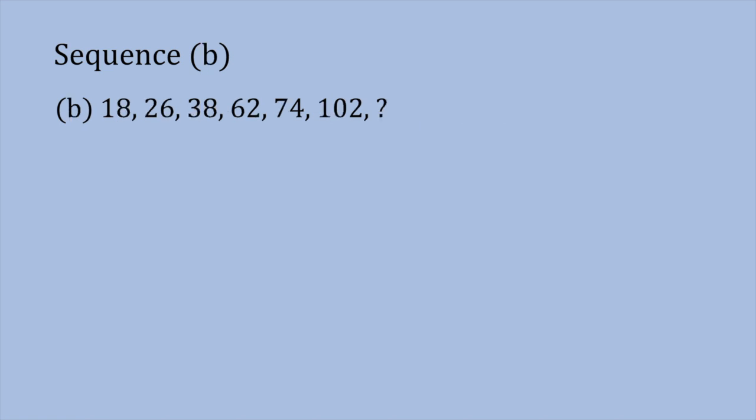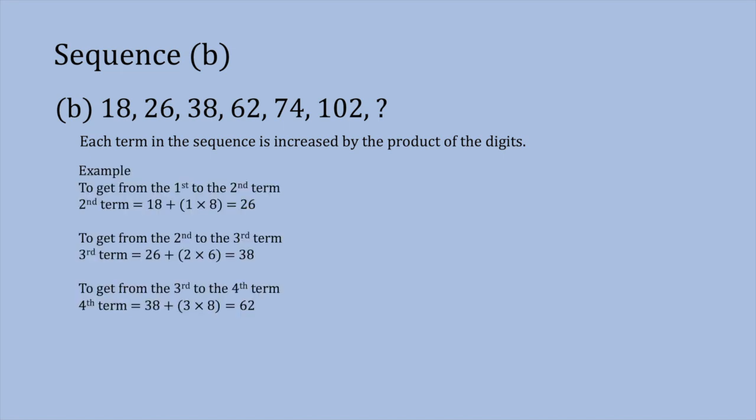Sequence B is made up of the terms 18, 26, 38, 62, 74, 102, and then the final term which we need to find. Similar to the first question, we need to see whether there is a pattern between each of the terms. What you should be able to see is that each term is increased by the product of its digits. Starting with 18: to get to the second term we do 18 plus 1 times 8, which is 8, giving us 26. Then 26 plus 2 times 6 is 26 plus 12, which is 38. To get from the third to the fourth term: 38 plus 3 times 8 is 38 plus 24, which gives us 62.